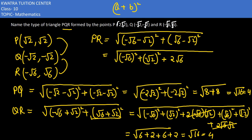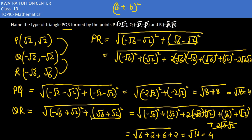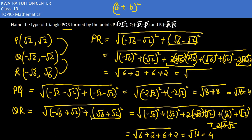Expanding, we get √6 squared plus √2 squared, and the cross terms with minus cancel out. The values are 6 + 2 + 6 + 2 = 16. So √16 = 4, meaning PR = 4 units as well.